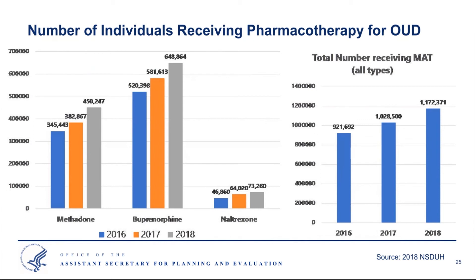While we certainly need to get more folks connected with medication-assisted treatment, we're making progress. In recent years we're treating more and more people, mostly with buprenorphine and methadone. Looking at everyone receiving some type of MAT, we are also seeing progress over the years 2016, 2017, and 2018. Despite the shortage of MAT providers noted earlier, we are providing more medication-assisted treatment, and we're happy to see that the trend is heading in this direction.